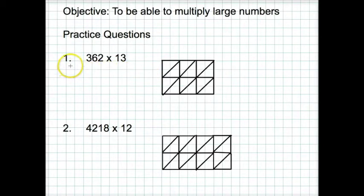Okay, welcome back. Question one then. We're going to write the 362 along the top of the grid, making sure you're writing the numbers directly above the columns. And the 13 we write down the right hand side of this grid.